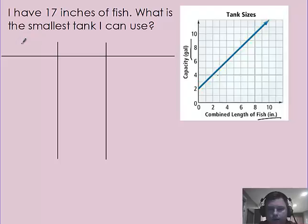And on the left-hand side is going to be my input, which is going to be my length of fish. So I'm going to say it's my length, and it's the input. On the right-hand side, it's going to be my capacity in gallons. So I'm going to say capacity, and that's also my output.